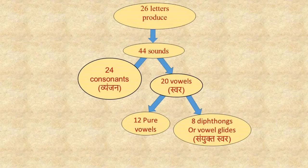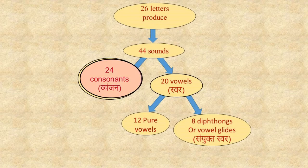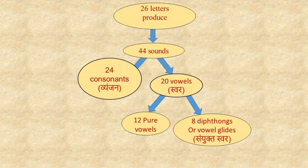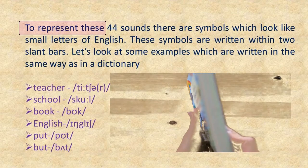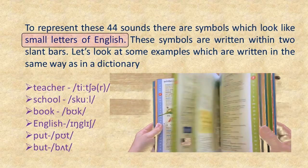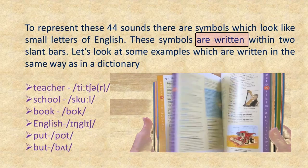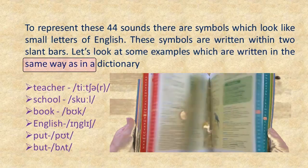In the English alphabet, there are 26 letters. These 26 letters produce 44 sounds. Of those 44 sounds, 24 are consonants (vyanjan) and 20 are vowels (swar). Of those 20 vowels, 12 are pure vowels and 8 are diphthongs or vowel glides (sanyukta swar). To represent these 44 sounds, there are symbols which look like small letters of English, written within two slant bars.